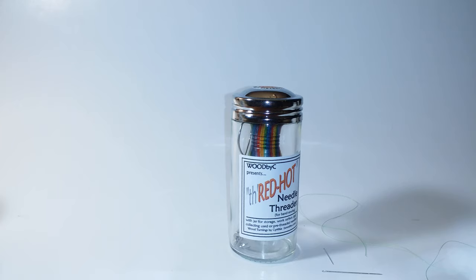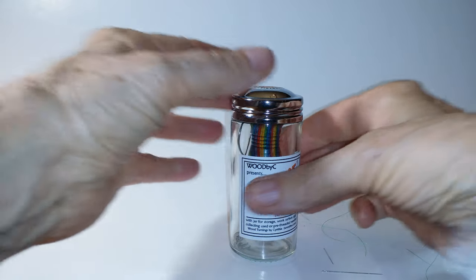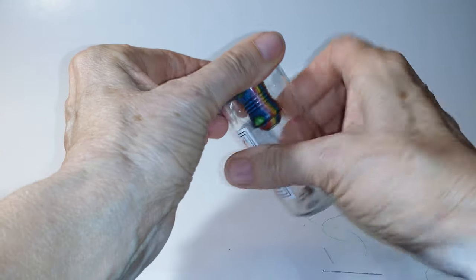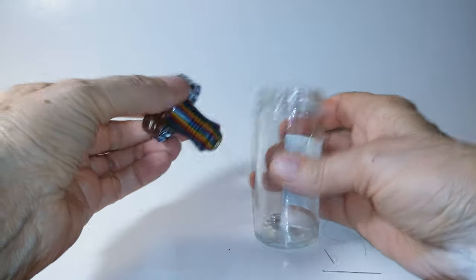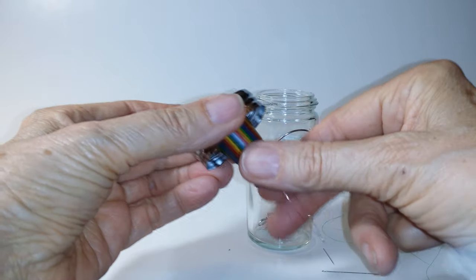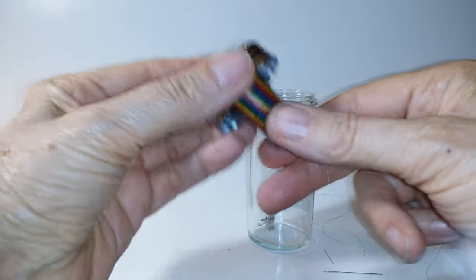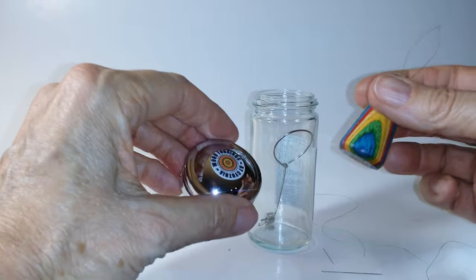I'm going to demonstrate how to use my ThreadHot needle threader, which is a magnetic threading device. It's kept inside a storage jar magnetically attached to the lid. When you want to go traveling, it's very safe to keep there.